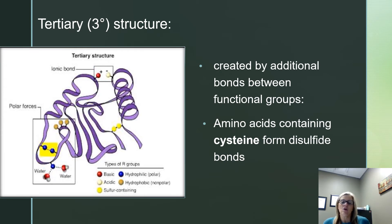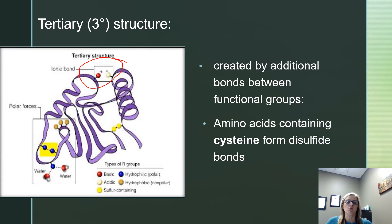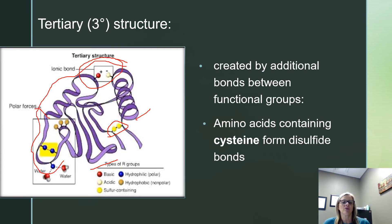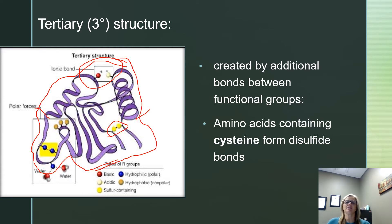The tertiary structure involves additional folding that occurs because of those functional groups — things like positive and negative charges, and disulfide bonds where two sulfurs bond together. This takes those alpha helixes and beta pleated sheets and causes them to fold up more, giving the protein an overall globular structure with a specific shape. All proteins have a primary, secondary, and tertiary structure.